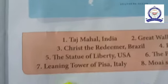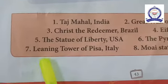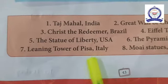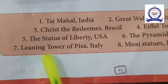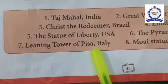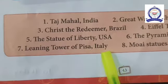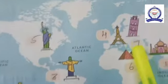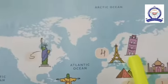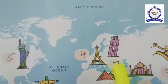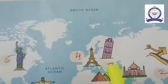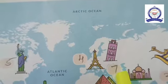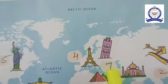The seventh one is the Leaning Tower of Pisa, Italy. This is the Leaning Tower of Pisa — it is in Italy. That is number 7.